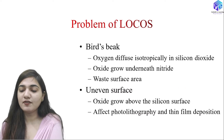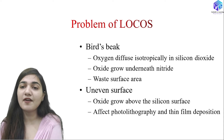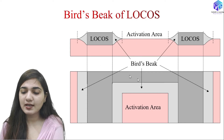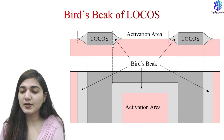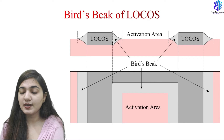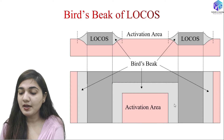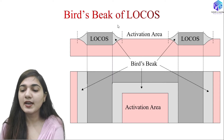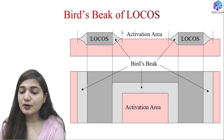The oxide grows above the silicon surface, which affects photolithography and thin-film deposition in subsequent steps — this is undesirable. The bird's beak of LOCOS reduces the active area: where the LOCOS forms, SiO₂ spreads beyond the intended region due to isotropic diffusion, resulting in a smaller active area than required. Because SiO₂ prevents future processes like diffusion and ion implantation, we end up with a lesser active area.